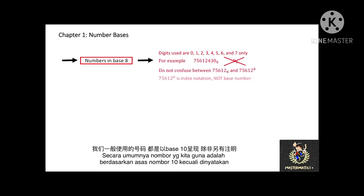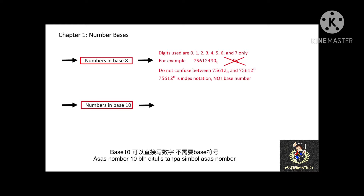Like what I mentioned in the beginning, the numbers that we use in mathematics calculations are all in base 10 unless stated otherwise. In base 10, you can use any digit from 0 to 9. For example, 84 in base 10. You can also write your number in base 10 without the base 10 symbol.